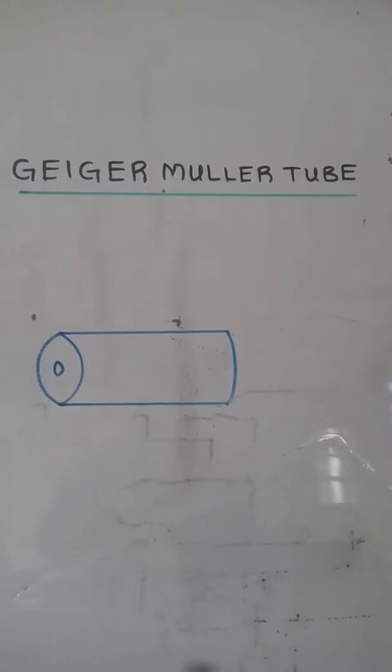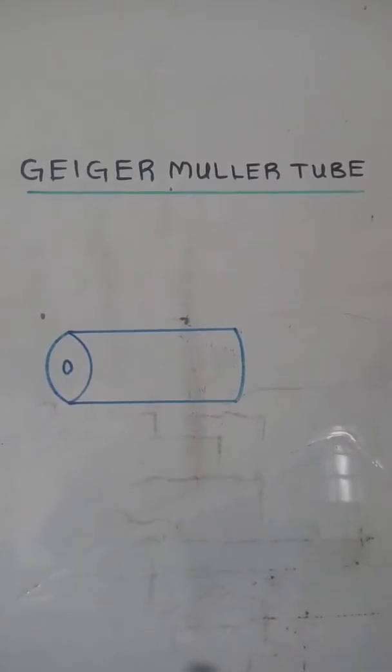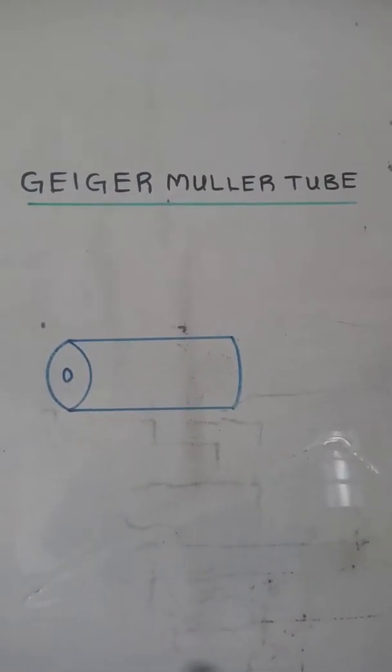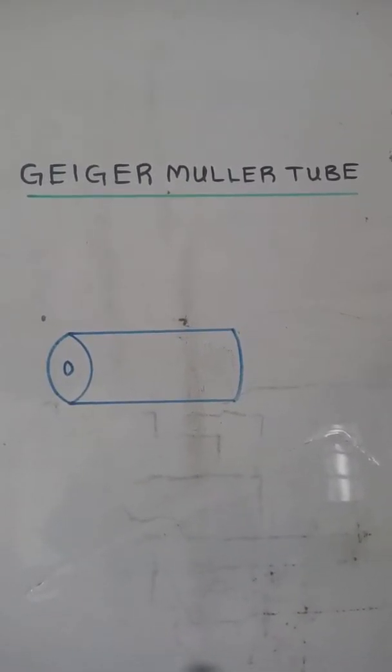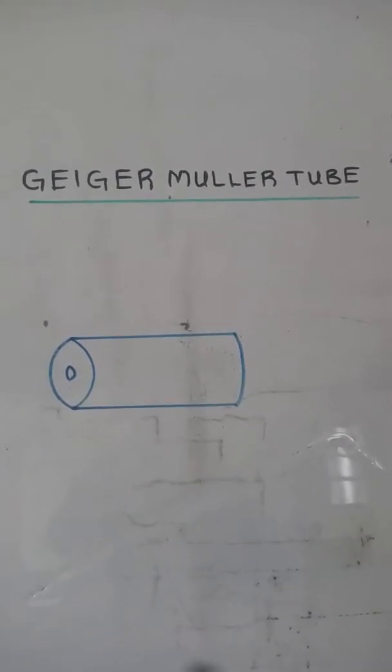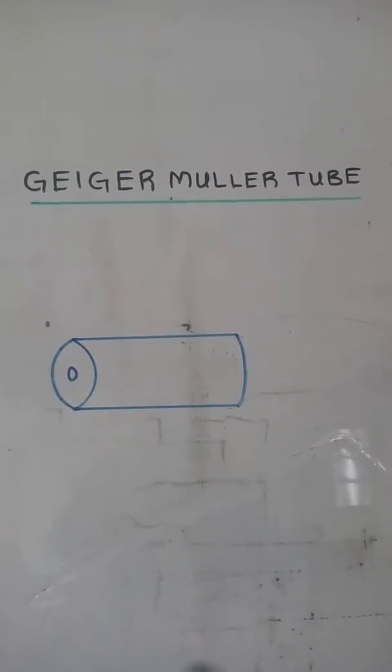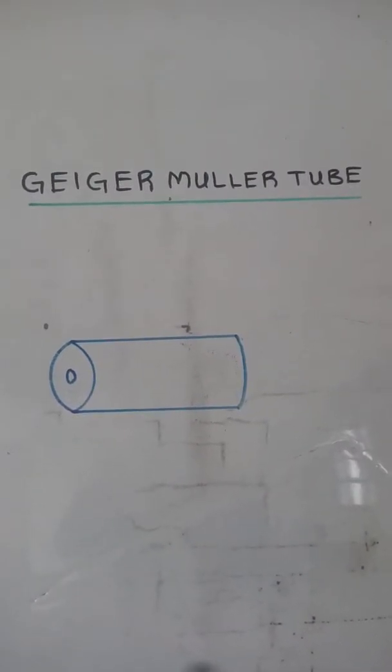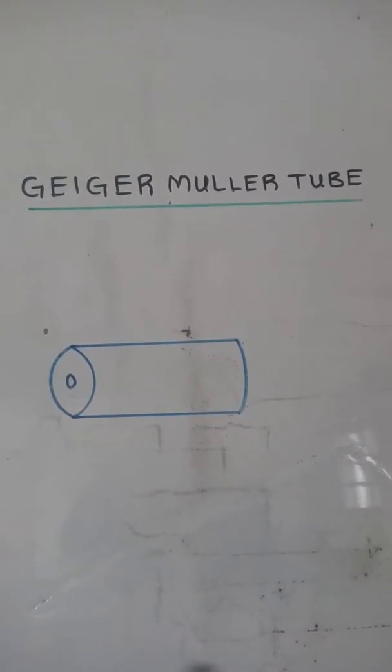Geiger-Muller Tube. This is the sensing element of a Geiger counter, an instrument that can detect a single particle of ionizing radiation.